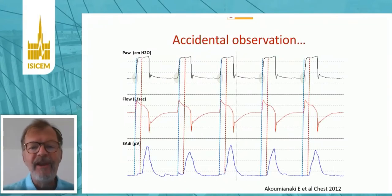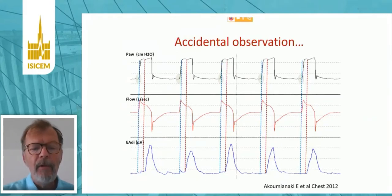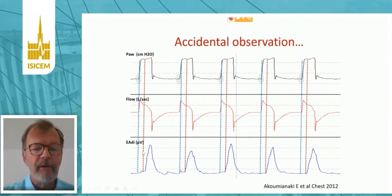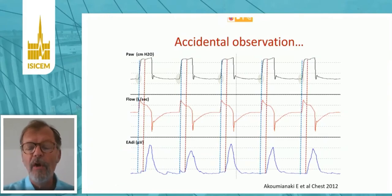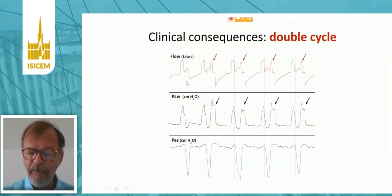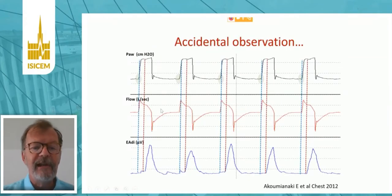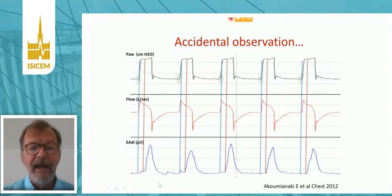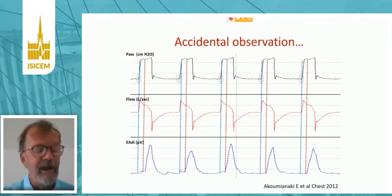We noticed that in a number of patients. This is another patient — in fact, the first recording we made — where we used the electrical activity of the diaphragm, which you can see at the bottom. This patient was supposed to be in pressure control ventilation with no spontaneous breathing activity. You see no deflection indicating that the patient would trigger the ventilator. But when we look at the electrical activity of the diaphragm, at every breath and approximately starting in the middle of the breath, there was a contraction and an electrical activity.